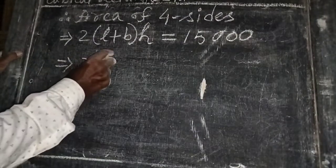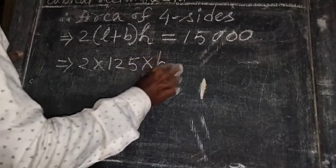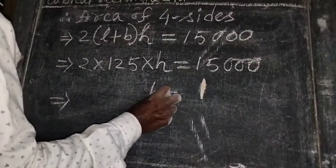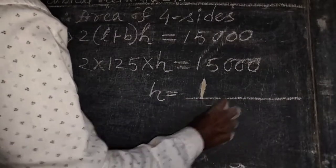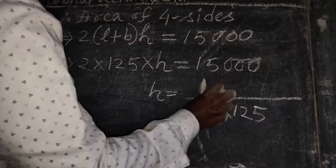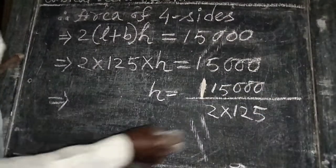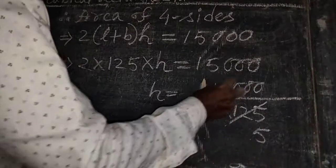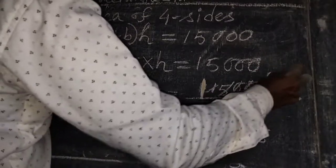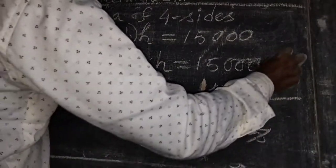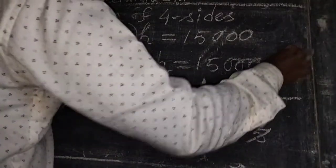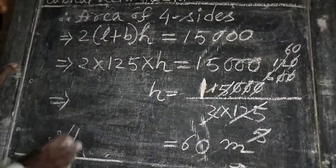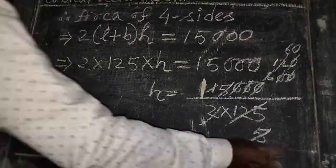Two into 125 into H equals 15000. Solving: H equals 15000 divided by 250 equals 60 metres. Question 5.